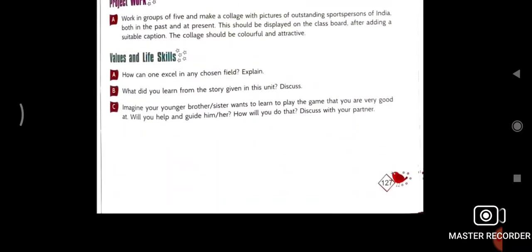Value and life skills. There are good thoughts here. How can one excel in any chosen field? How can be anyone excel means proved his importance, his performance in any type of field? And what did you learn from the story? That you have to mention, not to write actually, to understand actually. And imagine your younger brother, sister wants to learn to play the game that you are good at. Will you help and guide them? How will you discuss? Suppose that your younger brother or sister, he or she is good in any game, suppose at cricket. So how will you help him or her? Discuss with your partner. This exercise completed.